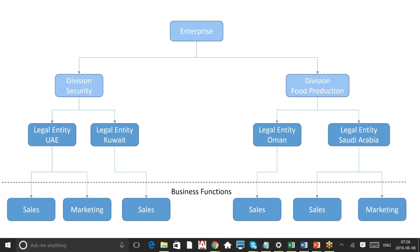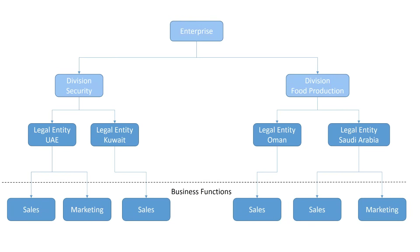Departments are pretty easy to identify — they are the cost centers. Now, there are two ways of putting the enterprise structure in the system. The first is the Enterprise Structure Configurator, which Oracle provides as a tool — a kind of wizard. It asks step-by-step questions: what is the name of your enterprise, what is the name of your division, which country do you want the legal entity in, and so on. You can start entering names, and when you click Save, it will generate your entire enterprise structure at once with the proper countries and legislation.